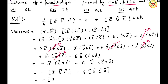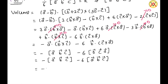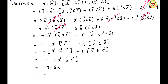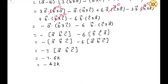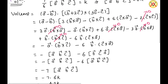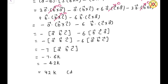This can be rewritten as -[a, b, c] - 6[a, b, c], which equals -7 times the box product of vectors a, b, c. Since we know the box product [a, b, c] equals 6k, the volume equals -7 × 6k = -42k. Since volume cannot be negative, the volume is 42k. Hence option D is correct.